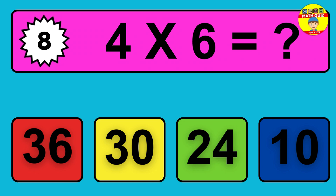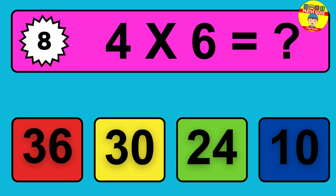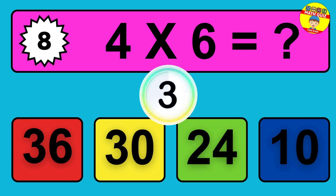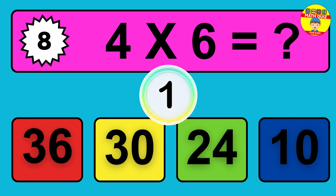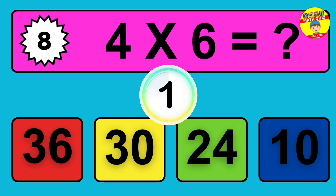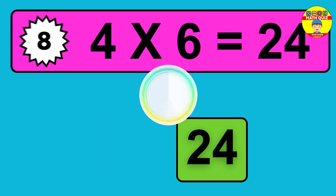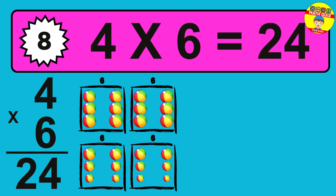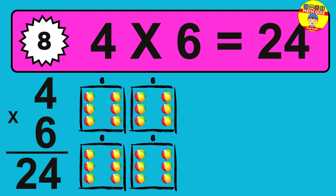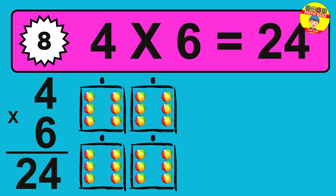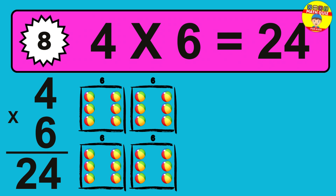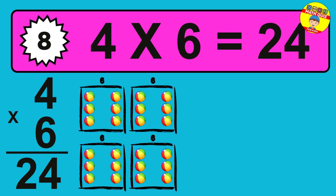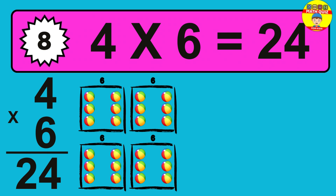Question 8. 4 times 6 equals what? So the answer is 4 times 6 is 24. To calculate, we have 4 groups with 6 balls each one. So how many balls do we have? 24 balls.